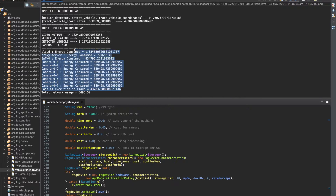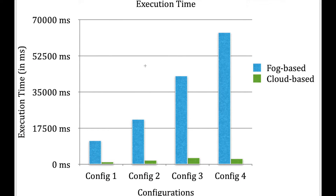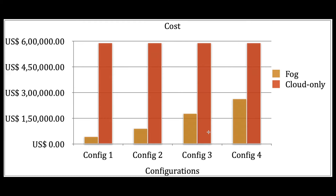As you can see, this is the output after the program is run. Now we will analyze the graph of execution time for fog-based versus cloud-based placements. The execution time for fog-based placement increases exponentially as the number of cameras is increased, whereas the execution time of cloud-based placement is far less than fog-based placement. This happens due to a lot of device intercommunication at the fog layer.